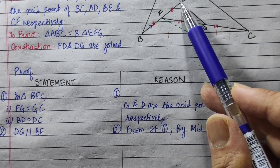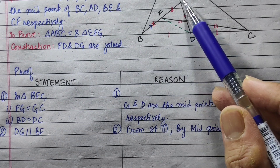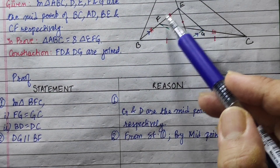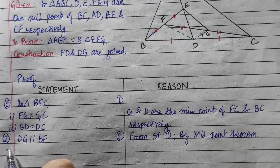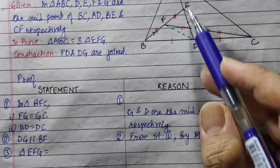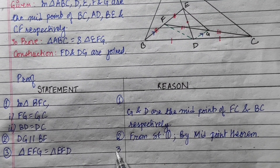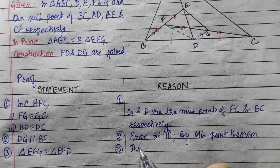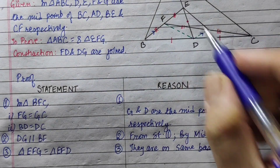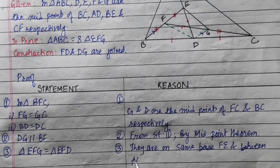Triangles EFG and EFD are on the same base FE and between parallel lines. Therefore, triangle EFG equals triangle EFD.